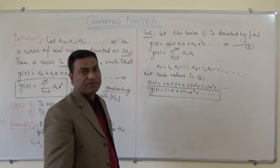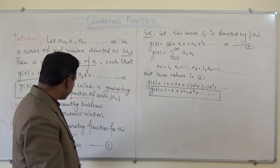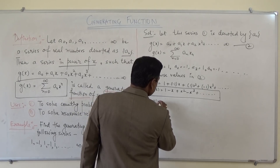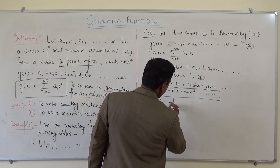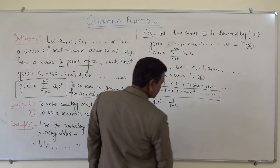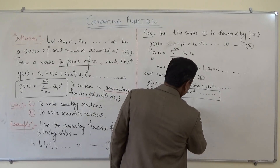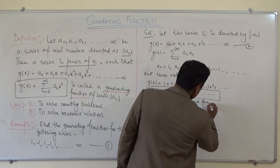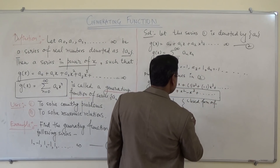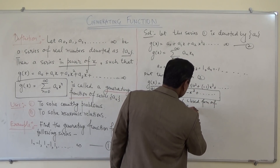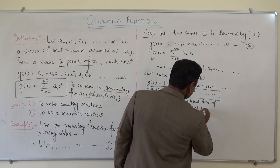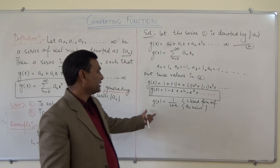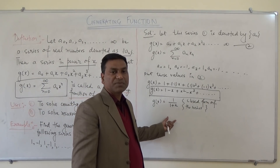This is the generating function for this particular series. It can also be written as G(x) equals 1 upon (1 plus x). This is the closed form of the series 1 minus x plus x² minus x³ and so on.